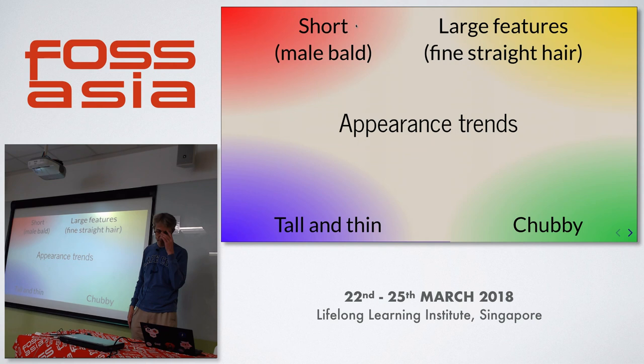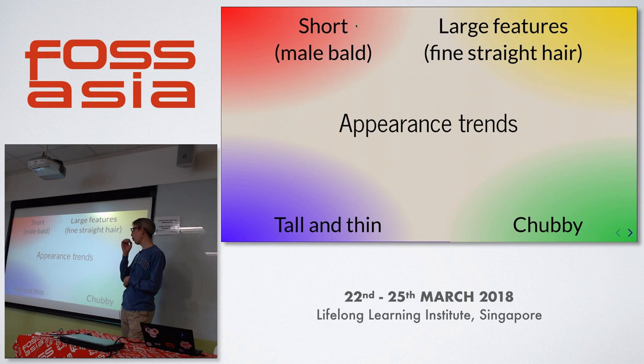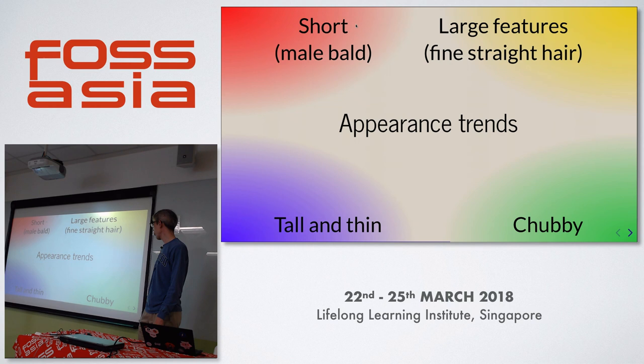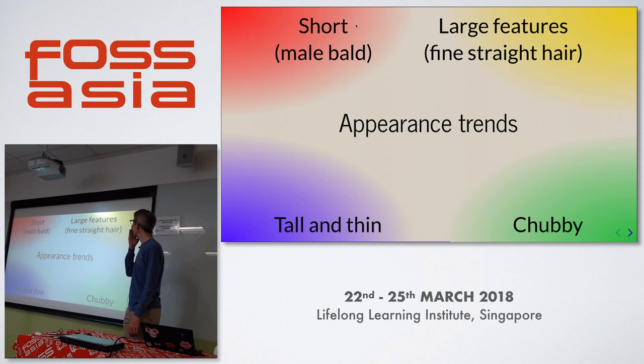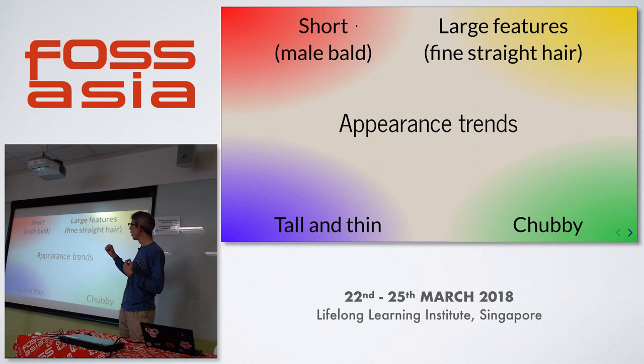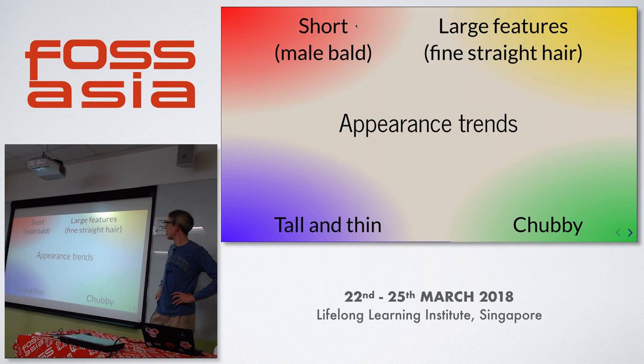This gets a bit controversial, but another very interesting aspect is that temperament actually affects the appearance of people. Melancholics often tend to be a bit tall, thin, and lanky. Phlegmatics may be a bit more chubby. Sanguines tend to have larger features — females often have long fine straight hair. And Cholerics tend to be a little short, and males often go bald.